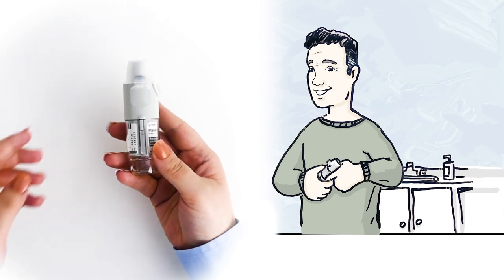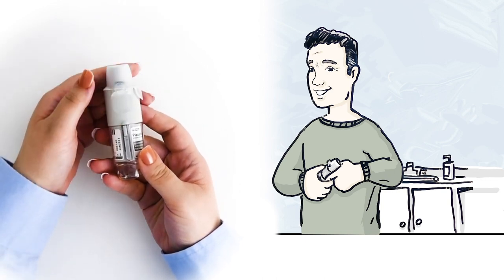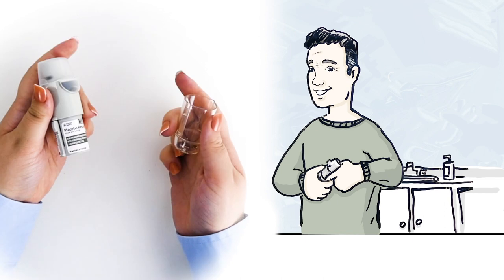First, press the gray safety catch button. Then with the other hand, pull down on the clear base. This lets the two pieces come apart.